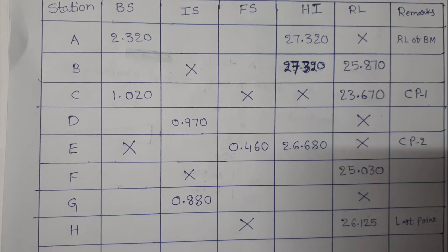First of all, we have to draw the figure using these values. The instrument is set here and we observe the back sight on the benchmark. The back sight reading is 2.320 and this is first point A. The RL of A is not known, but the RL of height of instrument is given as 27.320. This is setting position 1.